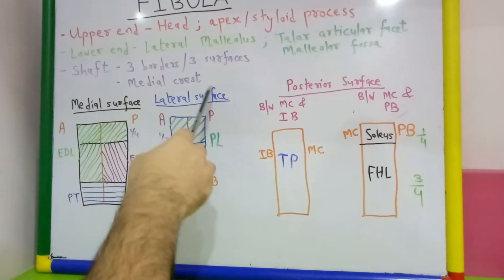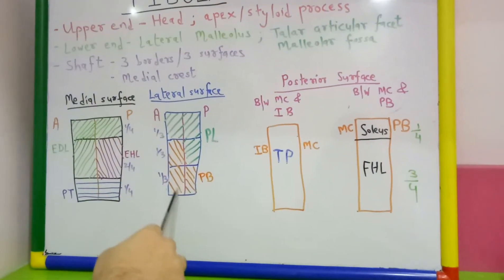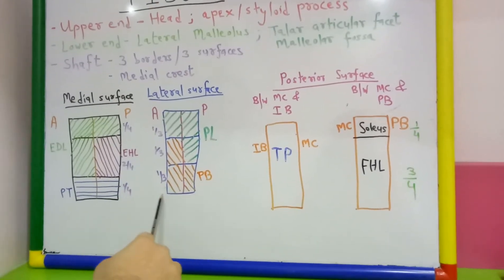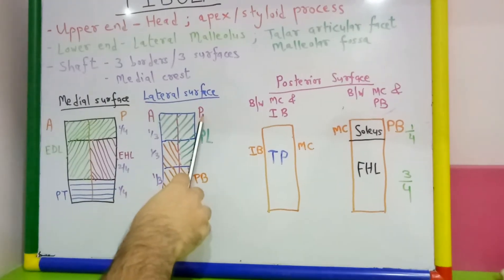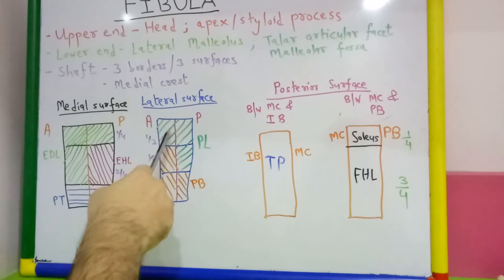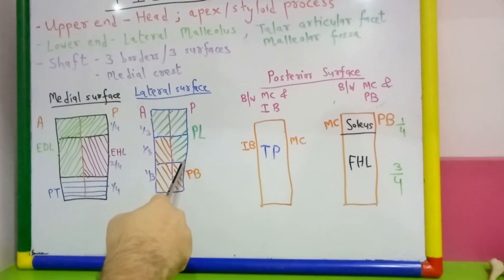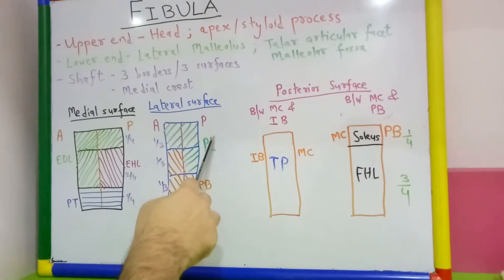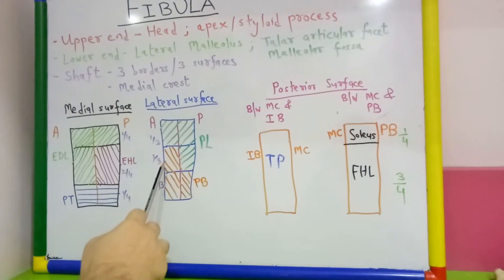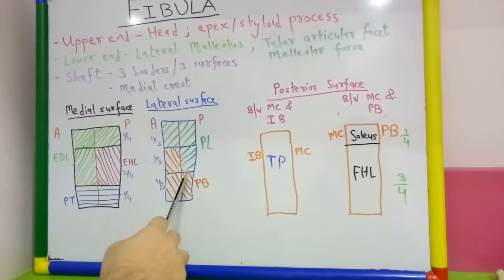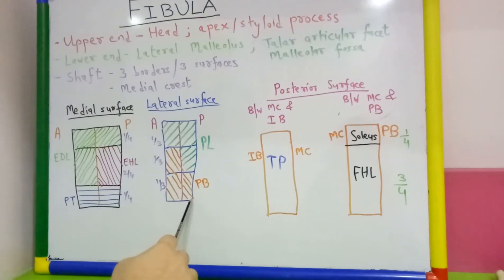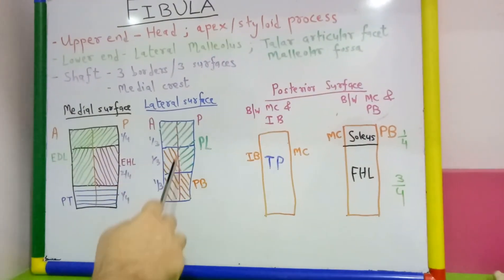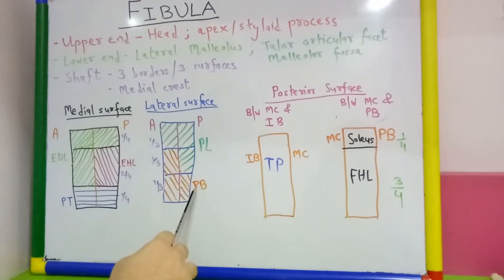Coming to the attachments on the lateral surface of the shaft, we divide it into upper one-third, middle one-third, and lower one-third, further divided into anterior and posterior halves. Peroneus longus arises from the whole upper one-third and the posterior half of the middle one-third. Peroneus brevis arises from the anterior half of the middle one-third and the lower one-third of the lateral surface of the shaft.